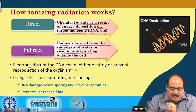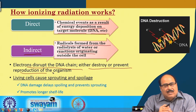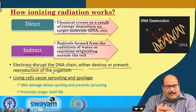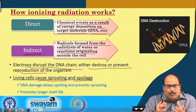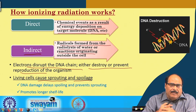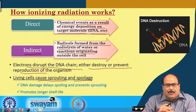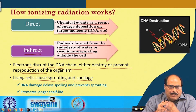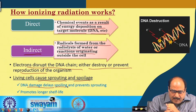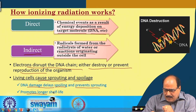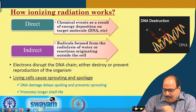Electrons disrupt the DNA chain, either destroying it or preventing reproduction of the organisms. Living cells that cause sprouting and spoilage in food — through microbial action or enzymatic and physiological processes in certain fruits and vegetables — get damaged by this DNA disruption. This DNA damage may delay spoilage, prevent sprouting, and promote a longer shelf life. This is how ionizing radiations work on food systems and biological materials.